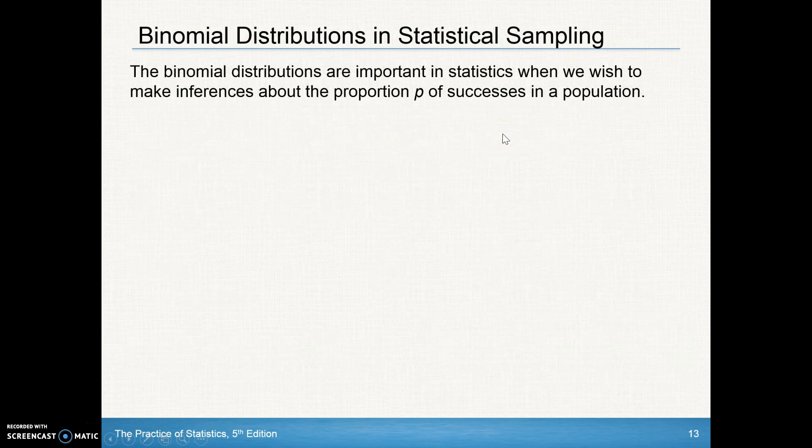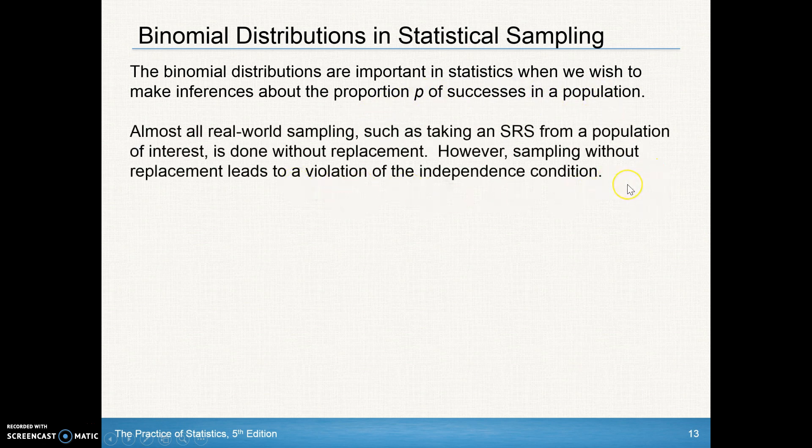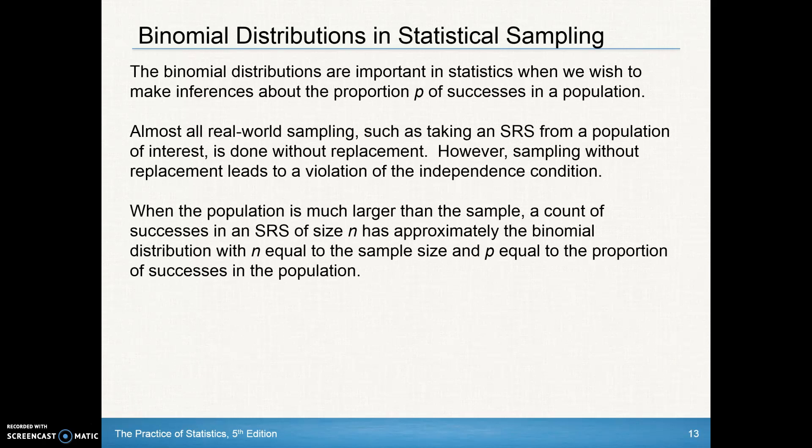These are important statistics when we wish to make inferences about the proportion of success in a population. Almost all real-world sampling, such as taking an SRS from a population of interest, is done without replacement. That should cause some concern, because if we sample without replacement, the probability changes from one to the next. That's a violation of the independence condition in our BINS acronym for establishing a binomial distribution. But when the population is much larger than the sample, the count of successes in an SRS is approximately the binomial distribution.